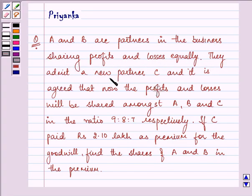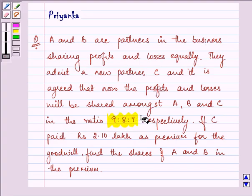They admit a new partner C and it is agreed that now the profits and losses will be shared amongst A, B and C in the ratio 9:8:7. Before, if they were sharing it equally, now they will share it as 9:8:7 after admission of partner C.